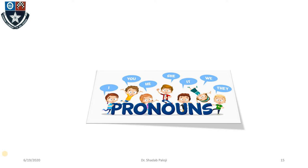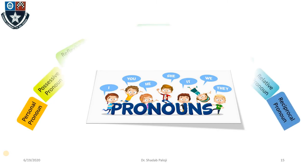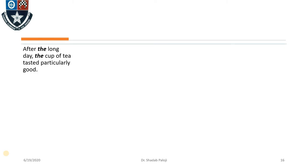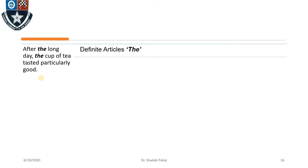Hello dear students. Last class we covered pronouns and the different types of pronouns. In this video we will see the remaining topics: articles, conjunctions, prepositions, and interjections. We will start with examples. The first example: 'After the long day, the cup of tea tasted particularly good.' The highlighted word here is 'the,' which would be called a definite article.